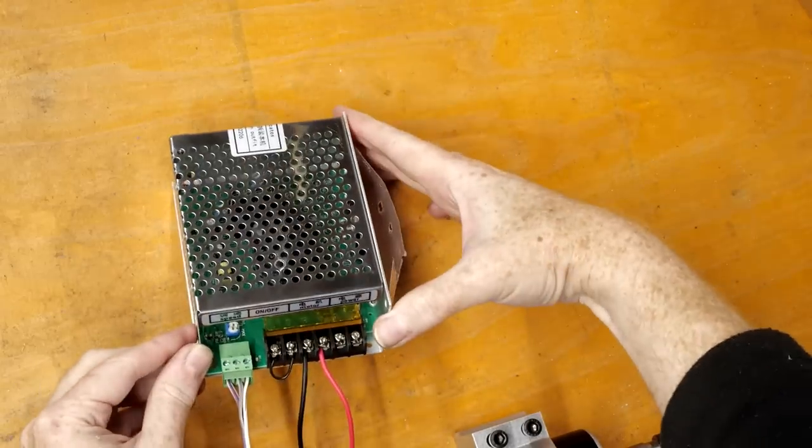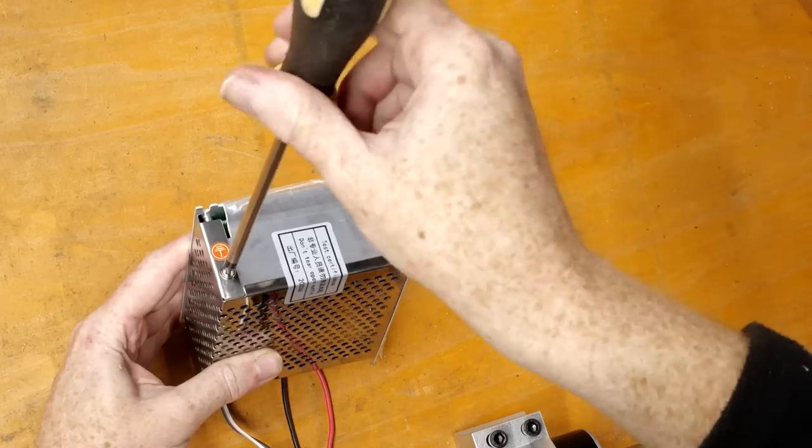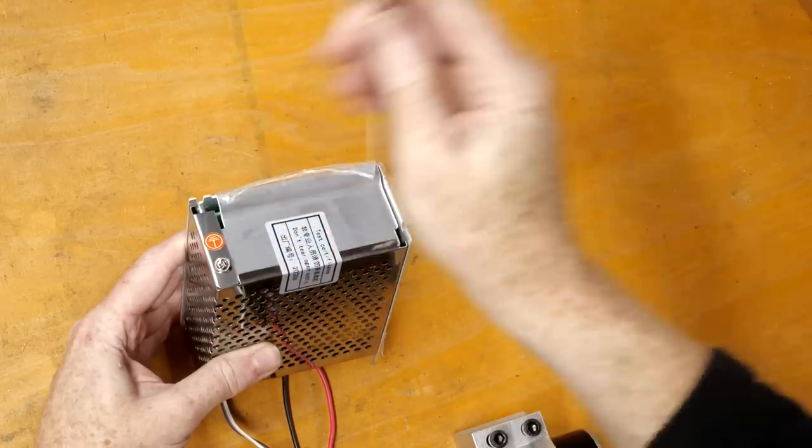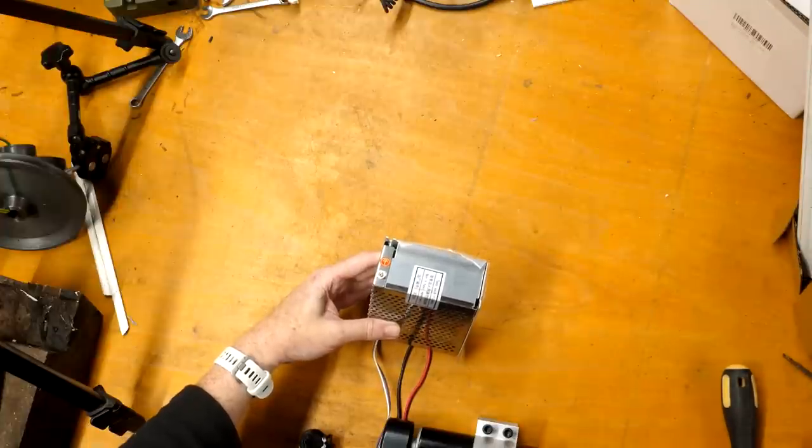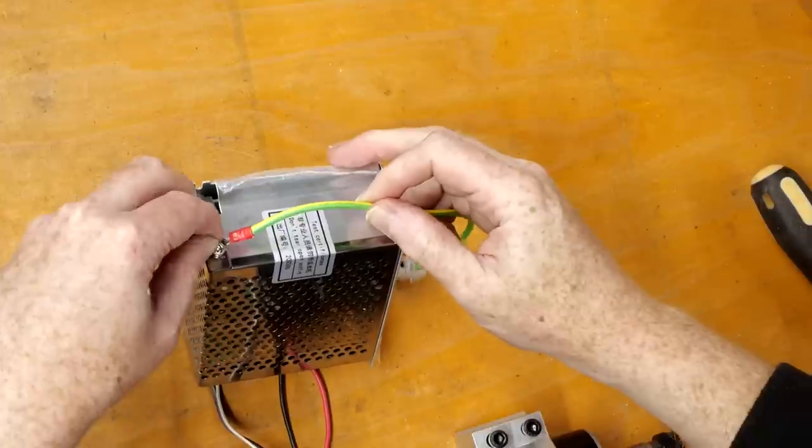With any unit with a bare metal case, it's vitally important to make sure it's properly earthed, but the earth terminal is way around the other side from the terminals. To avoid cutting down a lot of the length of the mains cable, I made up this extension to bring the earth connection round to the front.